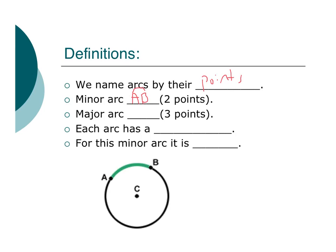Alright, a major arc has three points, so let's say this is point D over here. So what I'm going to have is arc ADB would be this arc all the way around the circle to point B right there.